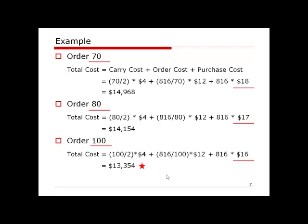This example shows that when quantity discounts exist, the EOQ quantity may not be the optimal order quantity. The EOQ balances holding cost and ordering cost, but does not consider purchasing cost. If we order a larger quantity, the savings from the lower unit purchase price may outweigh the extra carrying and ordering costs compared to using the EOQ quantity. This is the key approach for solving quantity discount problems.